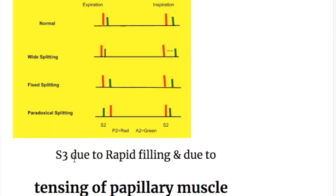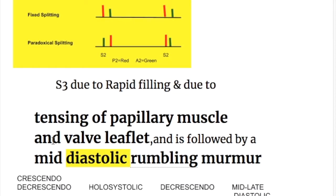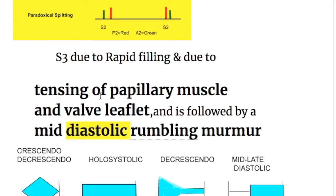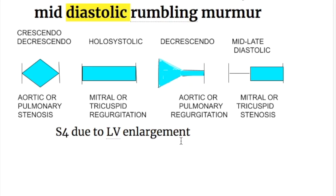There is a third heart sound due to rapid filling and tensing of the papillary muscle and valve leaflet, and this third heart sound is followed by a mid-diastolic rumbling murmur. There is also a fourth heart sound in mitral regurgitation due to left ventricular enlargement, producing a double apical impulse. The fourth heart sound does not occur in mitral stenosis because the left ventricle is normal in mitral stenosis.